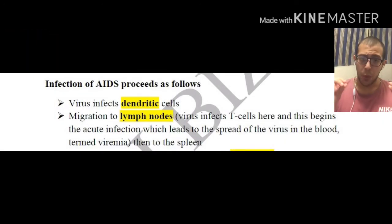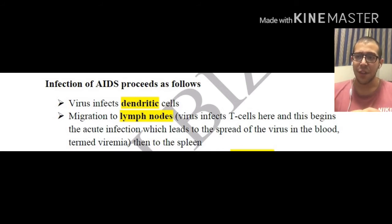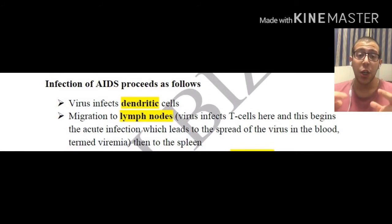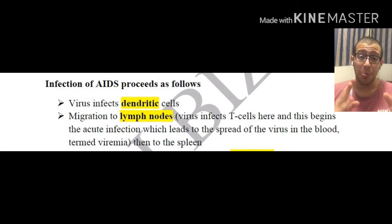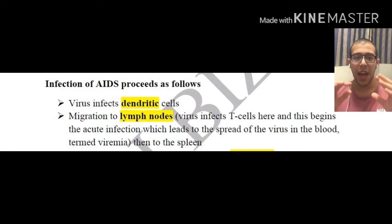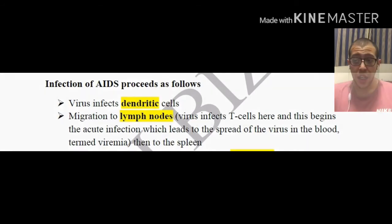Now let's talk about the mechanism of how AIDS infects. First, the virus infects the dendritic cells, which are among the most important antigen-presenting cells. The infected dendritic cells then migrate to the lymph nodes, where the virus infects T cells present there, beginning an acute infection that leads to the spread of the virus in the blood — termed viremia. After that, the virus moves to the spleen.